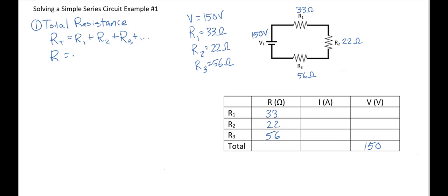So plugging into my numbers, I'm going to take 33 plus 22, which is 55, plus 56. That's going to be 111. So our total resistance is 111 ohms. So I can put that over here in my table.